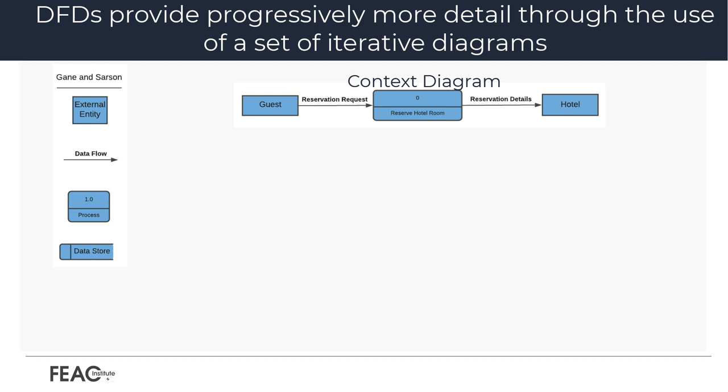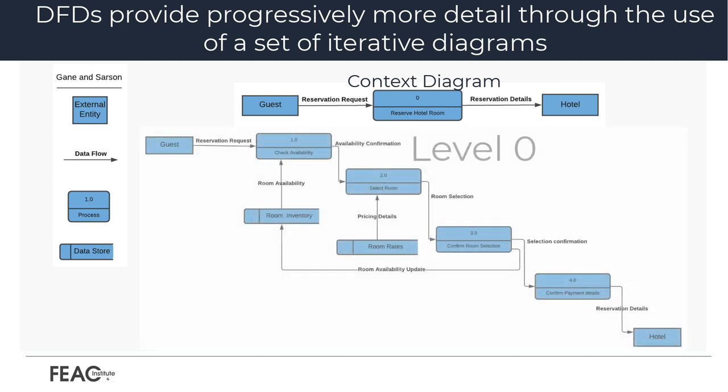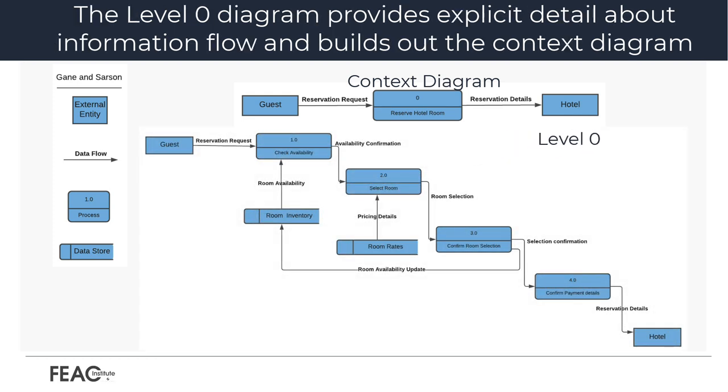A context diagram is a basic overview of the system or process being modeled or analyzed. It should be noted that the context diagram should only contain external entities and a single process symbol in addition to the related data flows. Next, we will progressively iterate from the context diagram to level 0. As we examine the level 0 diagram, we notice the introduction of the final element in the DFD notation: the datastore.